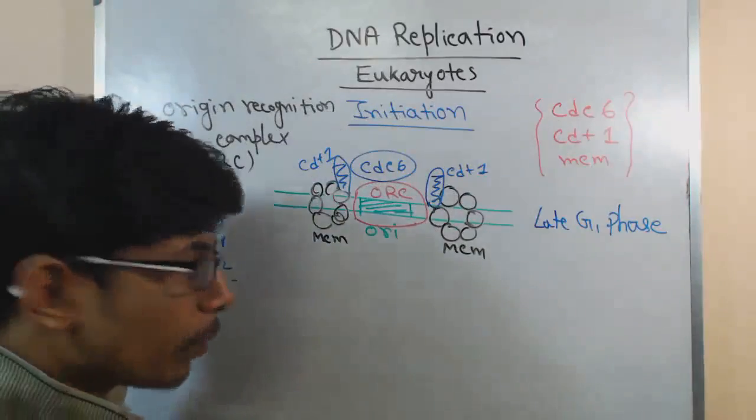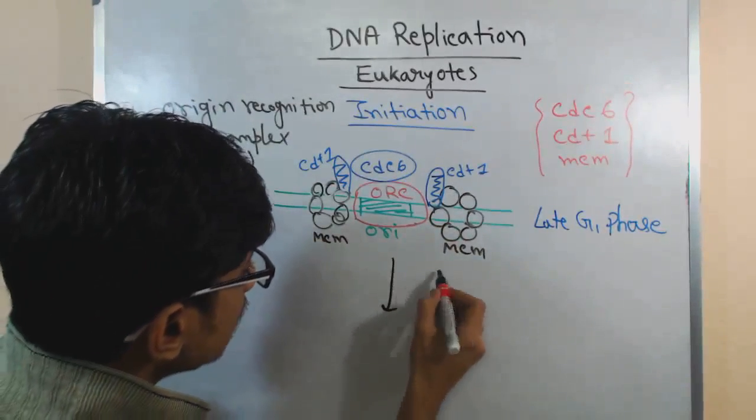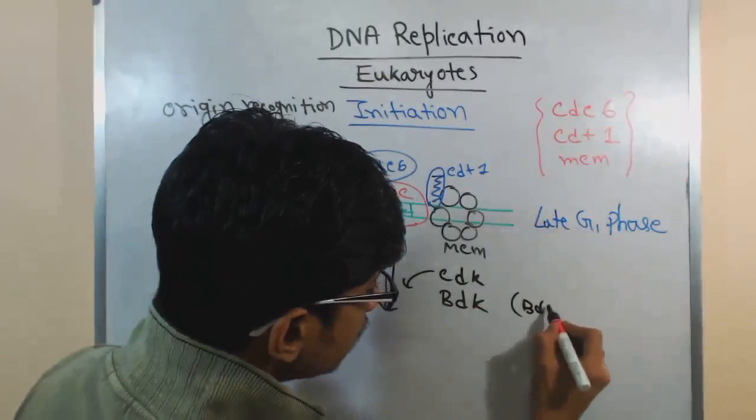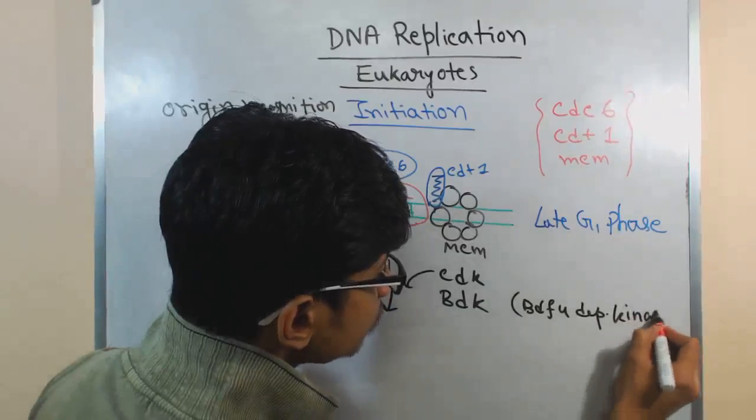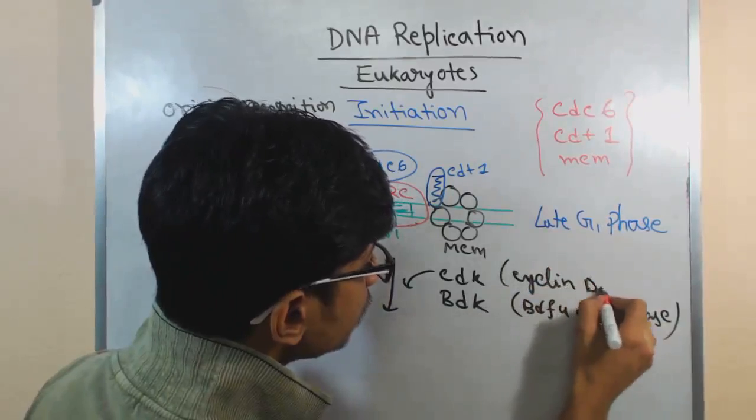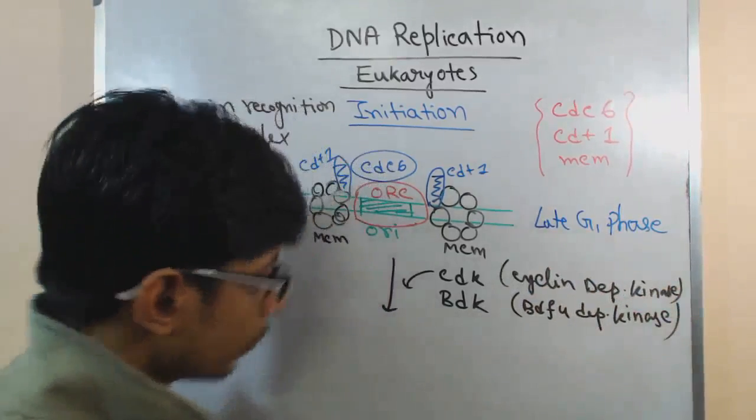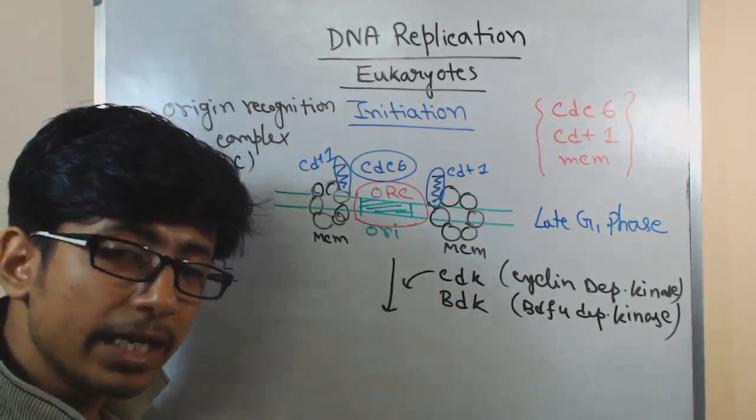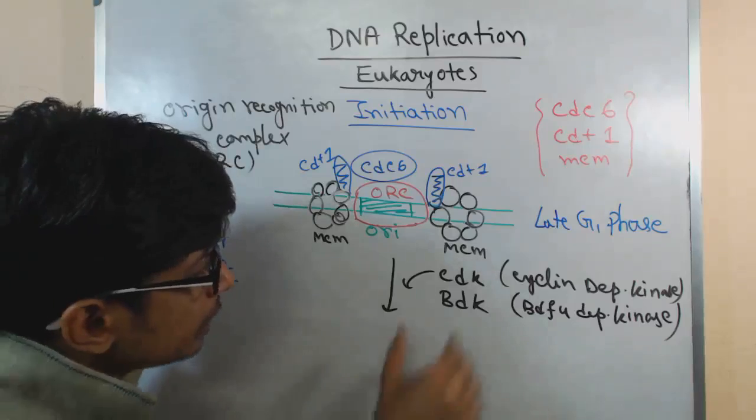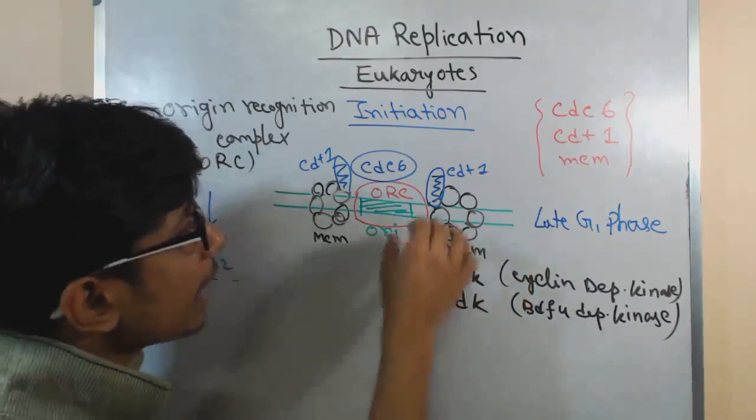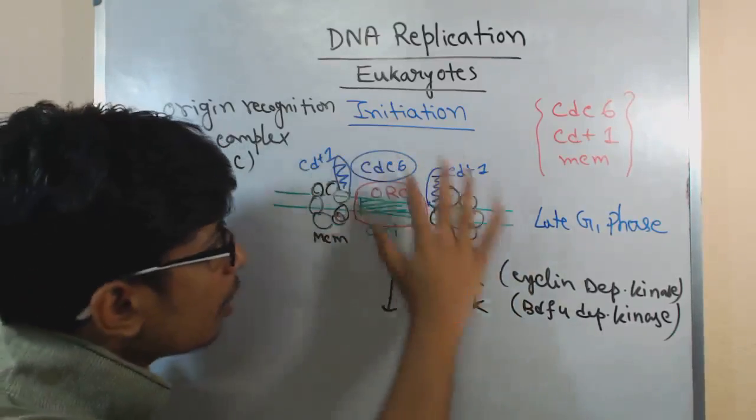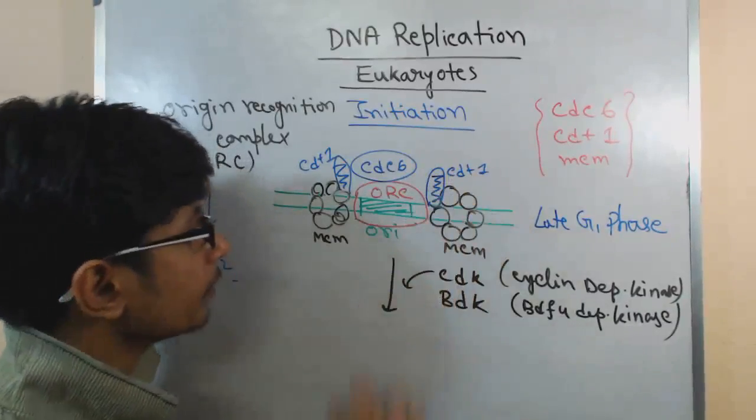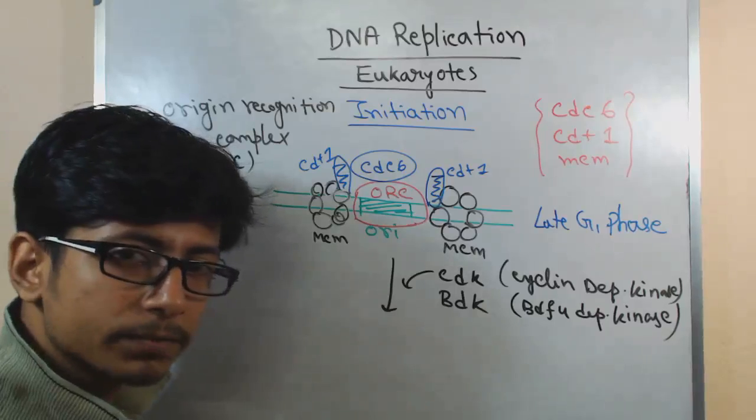While they are at the G1-S phase condition, there are CDK - cyclin dependent kinase - and there are BDK - DBF4 dependent kinase. Both of them act, and both of these kinases can phosphorylate other proteins to make them activated or to make some proteins inactivated. CDK and BDK phosphorylate MCM, they phosphorylate CDT, they phosphorylate CDC. They phosphorylate all the proteins out there.